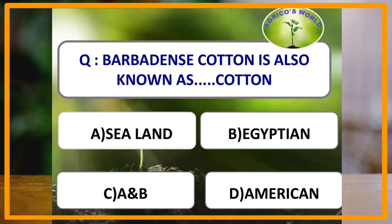Gossypium barbadense cotton is also known as which of the following type of cotton? Gossypium barbadense is also known as Egyptian and Sea Island type of cotton.